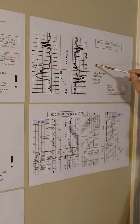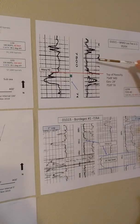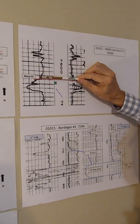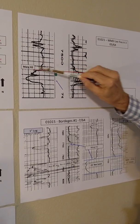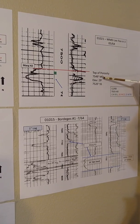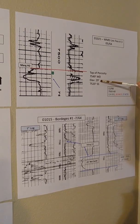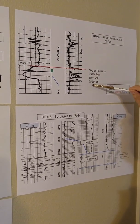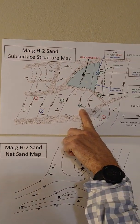This is an example of a one-inch log that we had on one of the wells. What we do is you have to figure out where the top of the Marge H2 is — it's at this depth. You have to correct any deviation or elevation of the rig, and you get 75-20 subsea. All these depths are in subsea; this is an example.